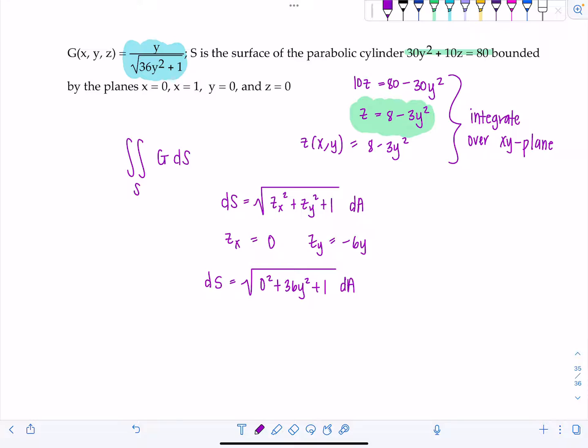Now let's graph the surface. So z equals 8 minus 3y squared. You should be able to graph that in the yz plane, and then we're just going to project it. And then again, the surface is bounded by the planes x equals 0, that's the yz plane, x equals 1, y equals 0, and z equals 0. So we're in the first octant. How lovely.